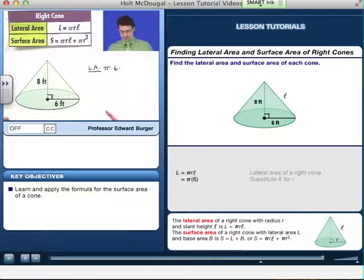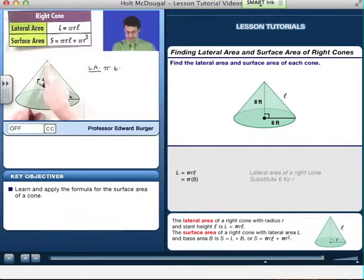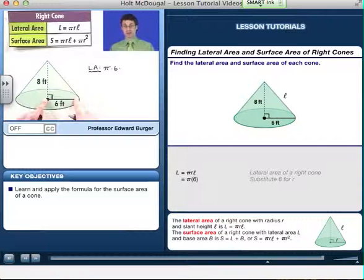So this seems like a little bit of a problem until we realize, wait a minute, this actually is forming a right triangle. Since it's a right cone, this angle is right, and so I've got a right triangle here. I can use Pythagorean theorem to find that hypotenuse.